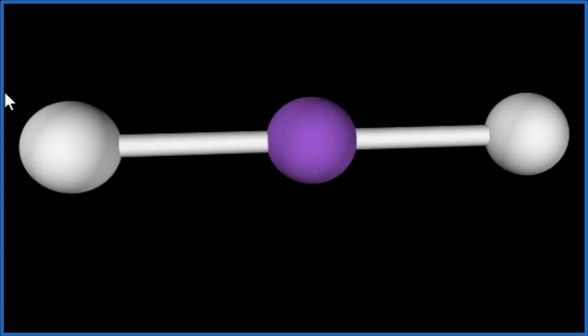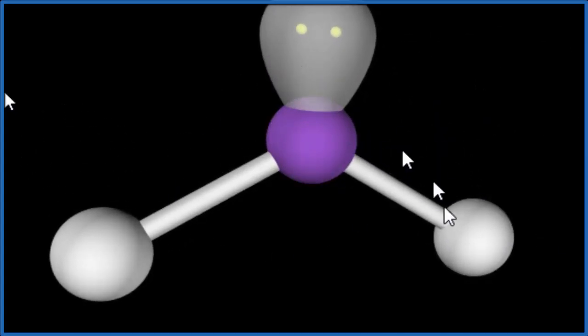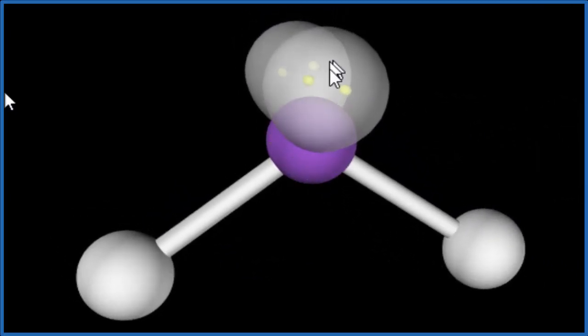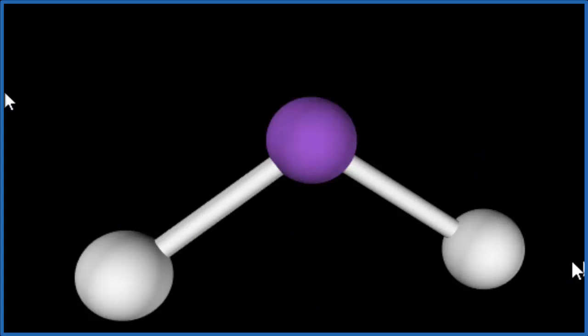They actually occupy space. Here's one of them, you can see how everything spreads out and pushes apart, and here's the other one. Water ends up having this bent molecular geometry because the lone pairs occupy space and push it down. Let's hide the lone pairs and talk about